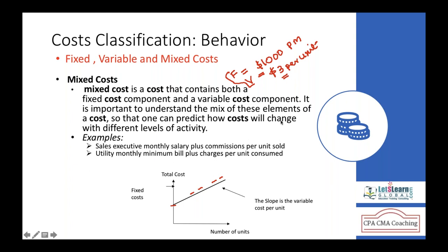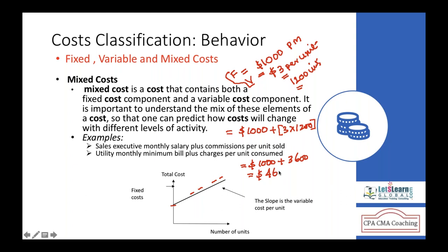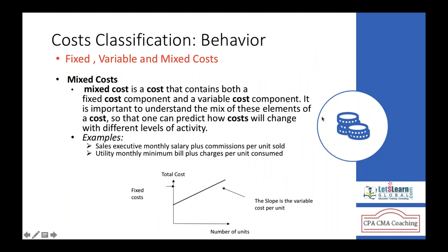For example, if a salesperson sold 1,200 units in a month, the total wage is the fixed cost of $1,000 plus the variable cost of $3 × 1,200 = $3,600. So the total wage for the month is $4,600 — $1,000 being fixed and $3,600 being variable. Since the total cost has a flavor of both fixed and variable, it becomes a mixed cost.